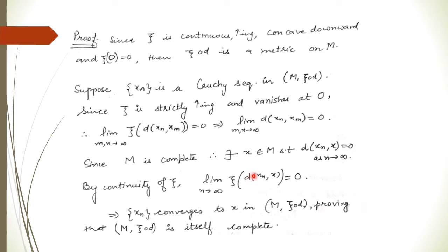But m is complete, so this Cauchy sequence must be convergent — say it converges to x. We get d(xₙ, x) → 0 as n → ∞, and by the continuity of ξ, ξ(d(xₙ, x)) → 0 as well since ξ vanishes at 0 and is continuous. So xₙ converges to x with respect to the metric ξ∘d, which means m is also complete with respect to this composed metric.